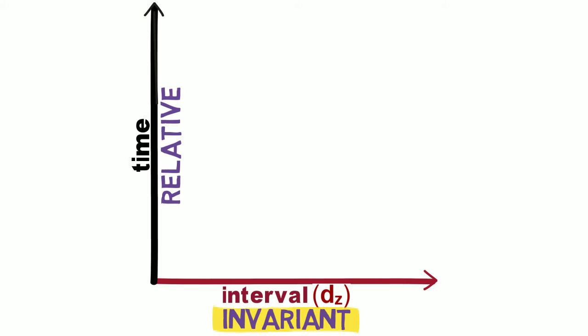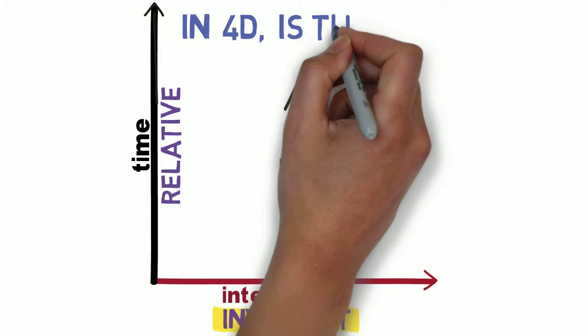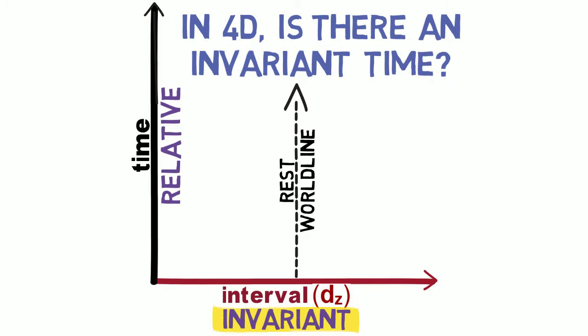Interval separations are the same for all inertial observers, but the time coordinate applies only to observers at rest in that coordinate frame. With four dimensions, one might reasonably ask if there is an invariant time. To answer, fixed makes a distinction you might never have.